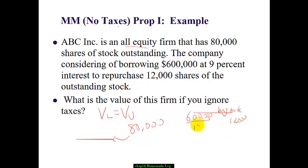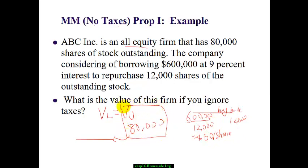That means each stock was $50 per share — that's the stock price. Under the all-equity capital structure, each stock is $50 and the price does not change. So what is the firm value? 80,000 shares times $50 gives a firm value of $4 million.